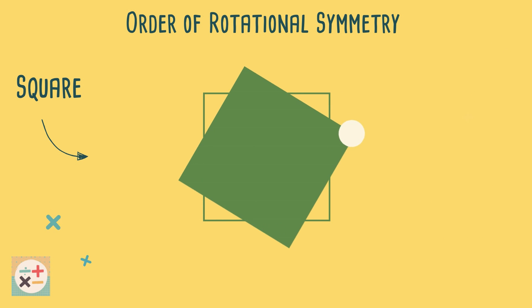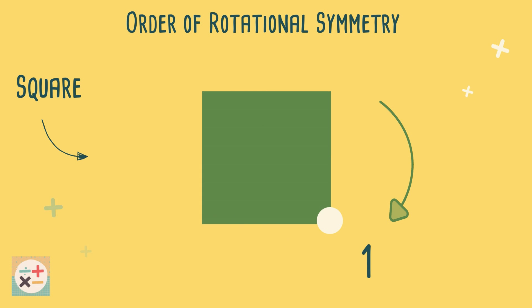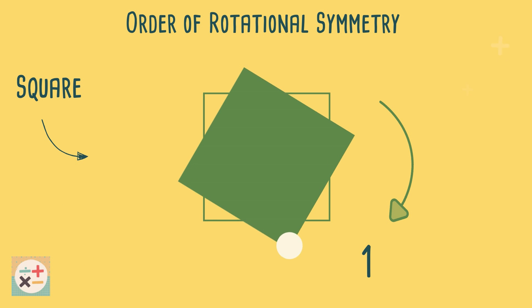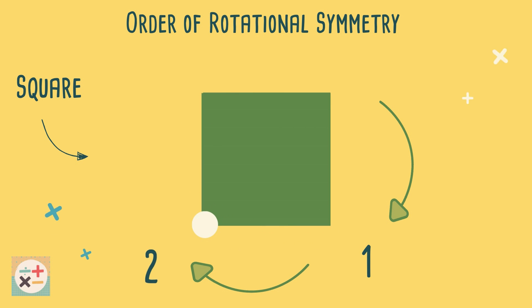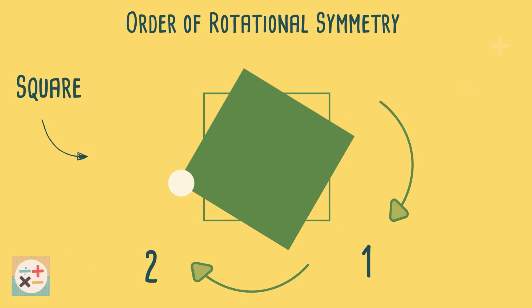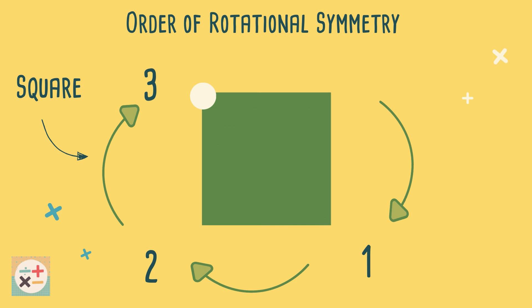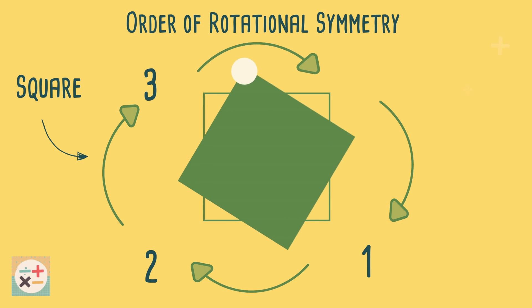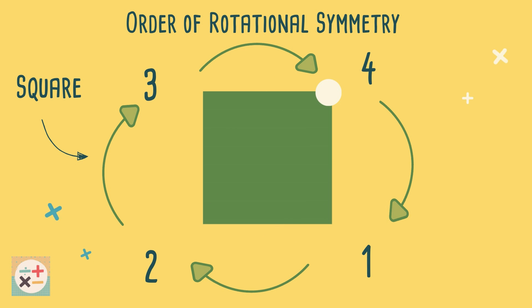As we rotate the square, we can see it looks the same in four different positions when the reference point ends up back at the starting position. Therefore, it has rotational symmetry of order 4.